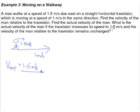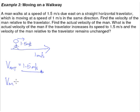Find the actual velocity of the man. Although the man is walking at a speed of 1.5 meters per second, he is actually not traveling at 1.5 meters per second — he is traveling faster because he is on a walkway moving at 1 meter per second. If he were moving on the ground, not on the travelator, he would be moving at 1.5 meters per second.